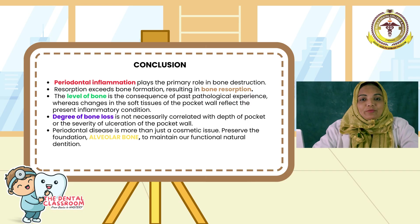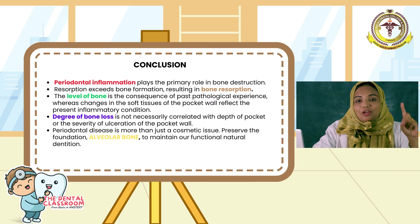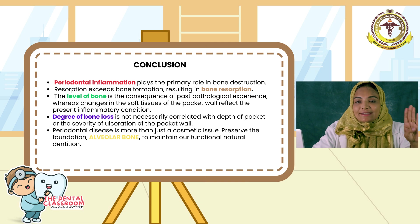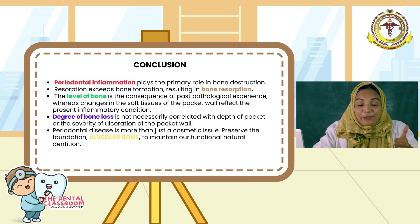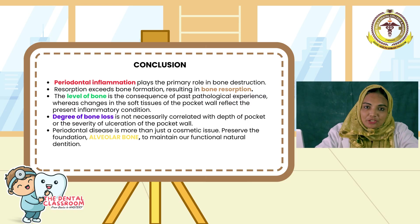Conclusion — let us quickly recap what we studied today. First, periodontal inflammation plays a primary role in bone destruction. Second, for bone loss to occur, resorption exceeds formation. Third, the level of bone denotes the pathological experience that has already been undergone. Fourth, degree of bone loss does not necessarily correlate with the depth of the periodontal pocket. Last but not the least, periodontal disease is not just a cosmetic issue — we have to preserve our foundation, the alveolar bone, to maintain functional natural dentition. That brings me to the end of my session. If you have any questions, you can write to us — I will be more than happy to help you out. I shall meet you soon with another gripping topic. Thank you.